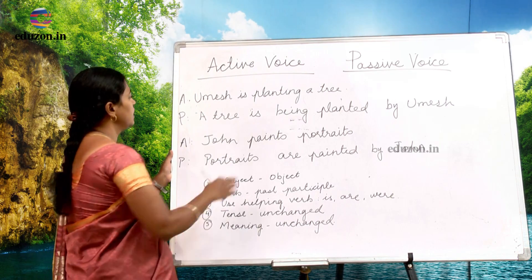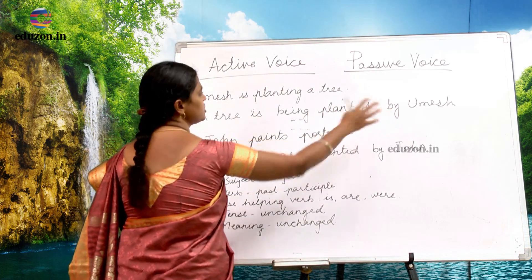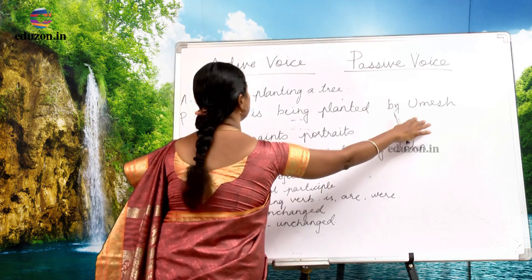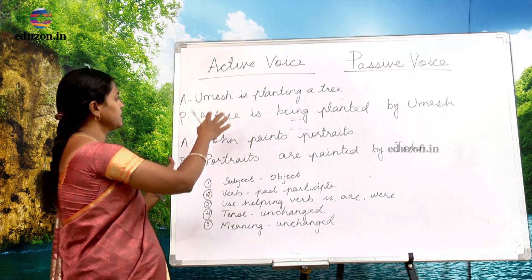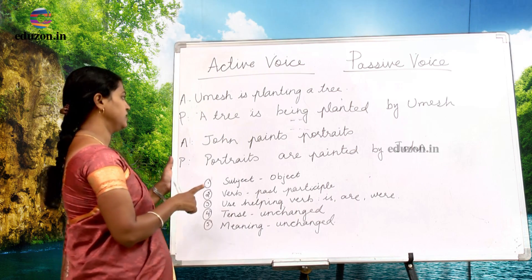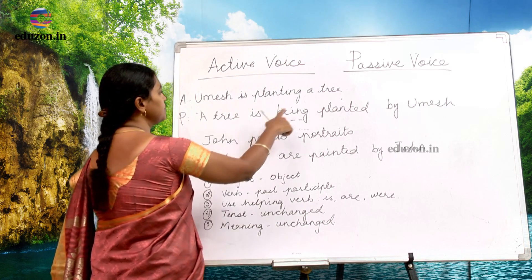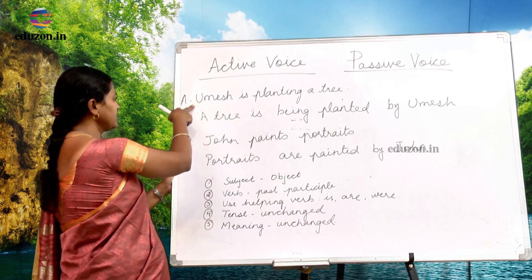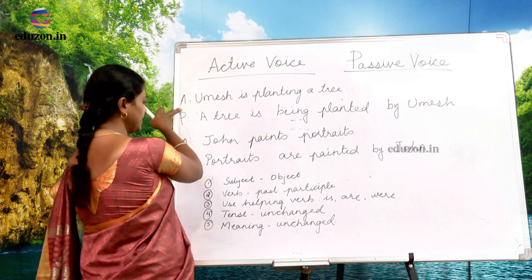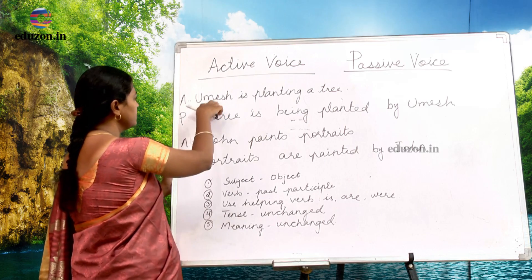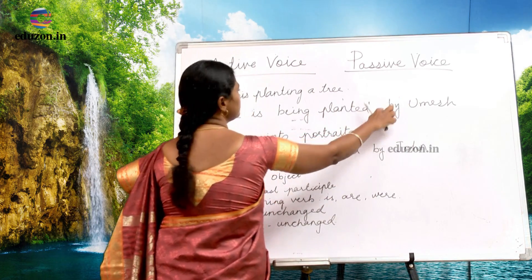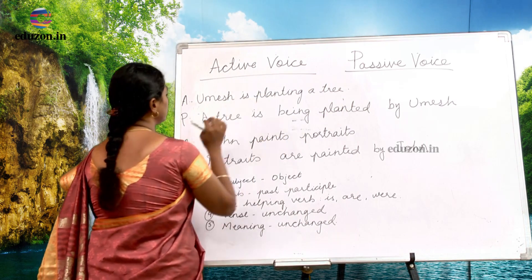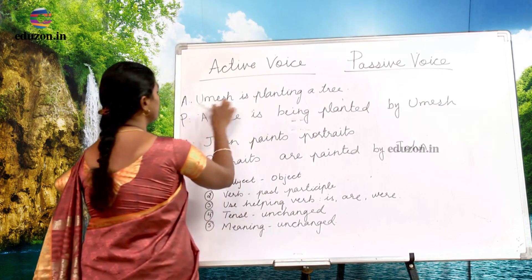In the second sentence, the subject and object get interchanged. A tree becomes the subject here and Umesh becomes the object. So first we take the subject — hence we say 'a tree' in the beginning of the sentence: a tree is being planted by whom? By Umesh. So whenever a subject in active voice becomes object in passive voice, it is prefixed by the word 'by'. So: Umesh is planting a tree → a tree is being planted by Umesh.